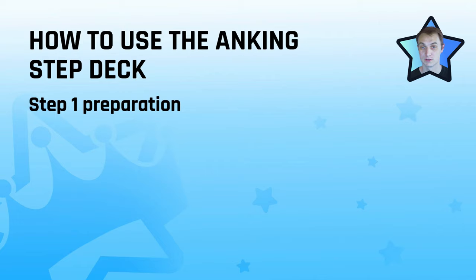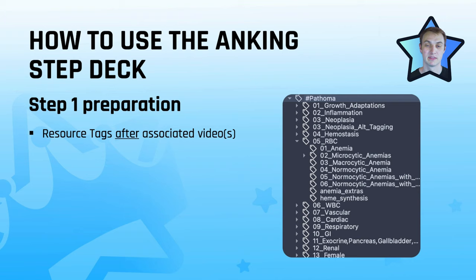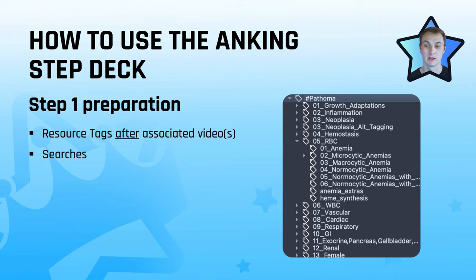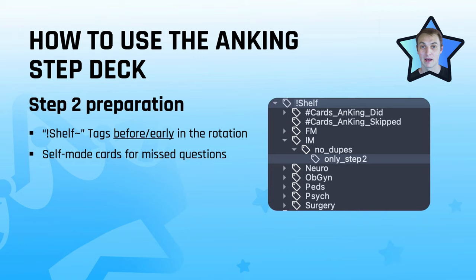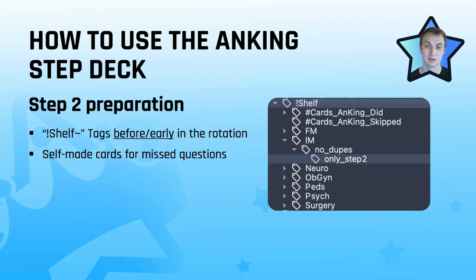When you start getting into Step 1 preparation — when you're in blocks learning about cardiology and things like that — check the resource tags in the Step 1 deck. Here's the Pathoma tag: you go watch the Pathoma video; if I watched the one on anemia, I'd come here, click the anemia tag, and unsuspend all those cards, ideally studying them the same day I watched the video. You'll also still do searches for individual cards based on lectures. You'll start doing practice questions to solidify and apply this stuff. For Step 2, use the shelf tags — we've arranged everything by the shelf exams. There are Step 2-only sub-tags so you can focus on just new content, since you won't have nearly as much time for flashcards during rotations.